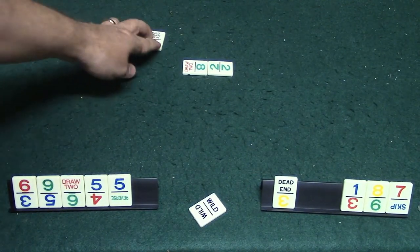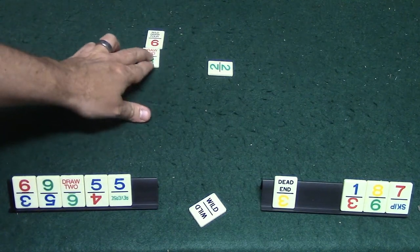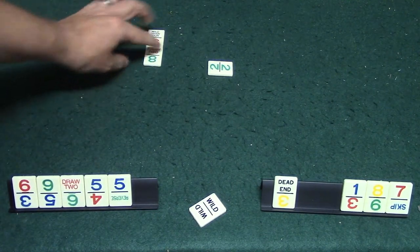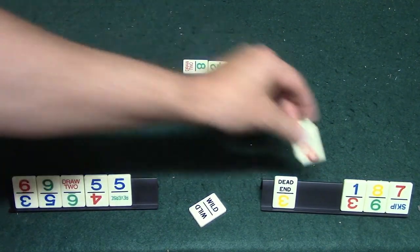Now you'll notice that there is a draw two command here on the bottom. In this case this is not going to be activated because it is on the bottom. It has to connect to the domino that you're playing on, so if it was like this for example then the other player would go ahead and draw two like so.